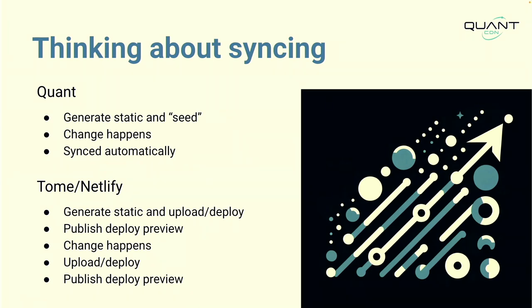When talking about these two modules for Drupal syndication into your static host: Quant will generate an initial seed — the initial output of all the current state of your Drupal site. Then the Quant module tracks change as it happens — as an editor changes a node, Quant will re-queue that asset and all related assets and handle a push on cron or whenever you've configured it. With Netlify and Tome, you have to generate the static output and then do the deploy every time.